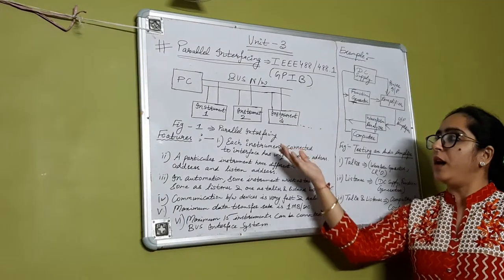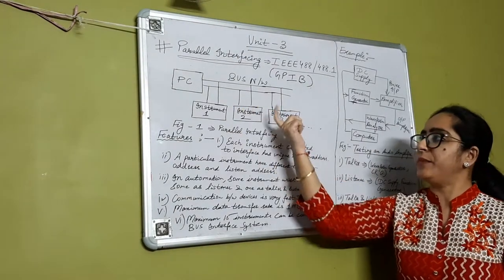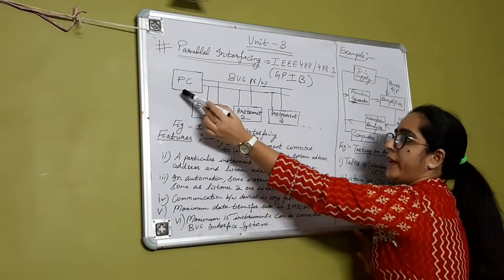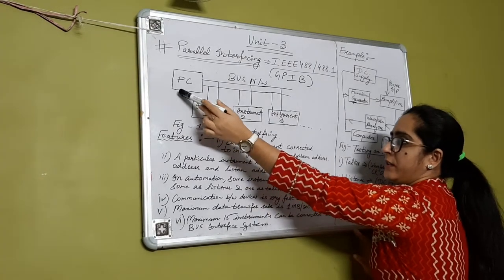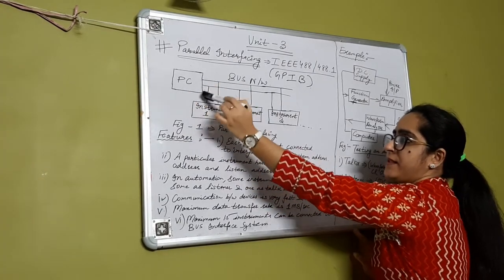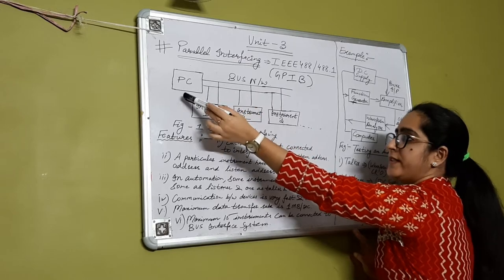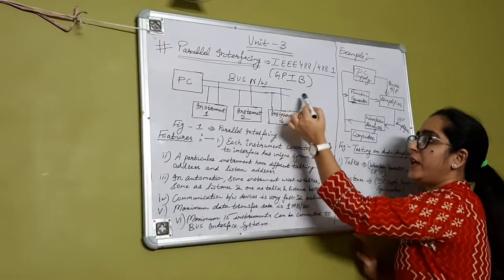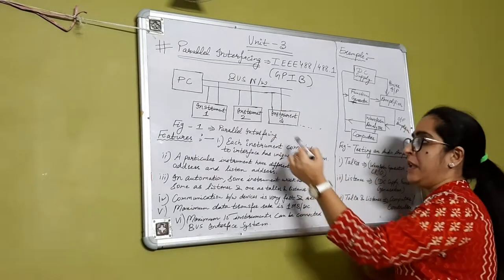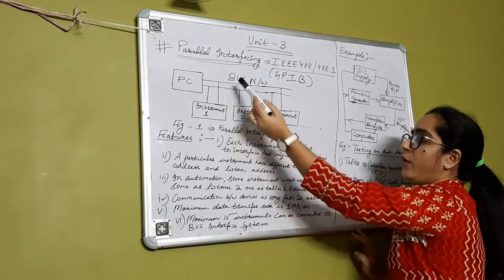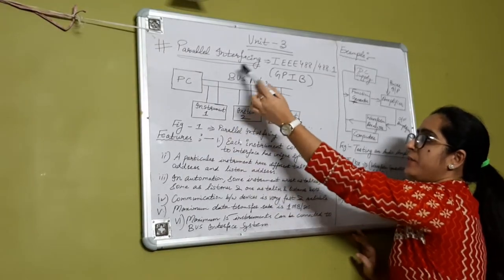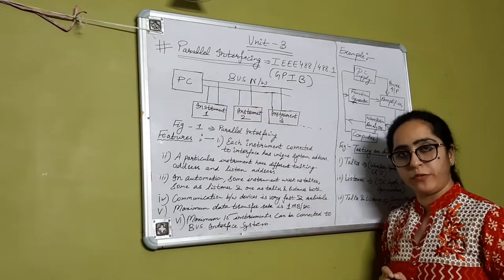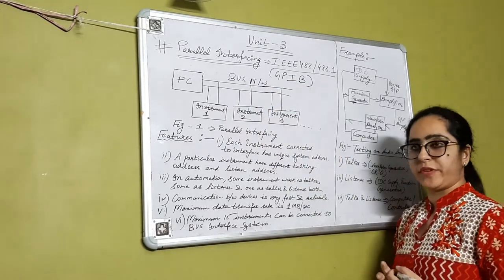All these can be connected as shown in the diagram. Here the PC or controller is there, which is controlling all the instruments connected through the communication cable. This bus network is known as IEEE 488 or General Purpose Interface Bus.